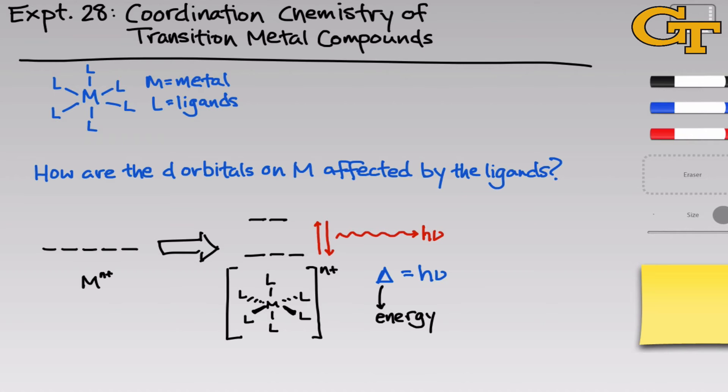This pattern of splitting with three on the bottom and two on the top is peculiar to the octahedral geometry, but the extent of the splitting, in other words the value of delta, whether it's large or small, depends on many different factors. And one of the key questions of this experiment is what affects this delta, and how does it affect it? In other words, what are the trends in how L and the metal affect the orbital splitting delta?